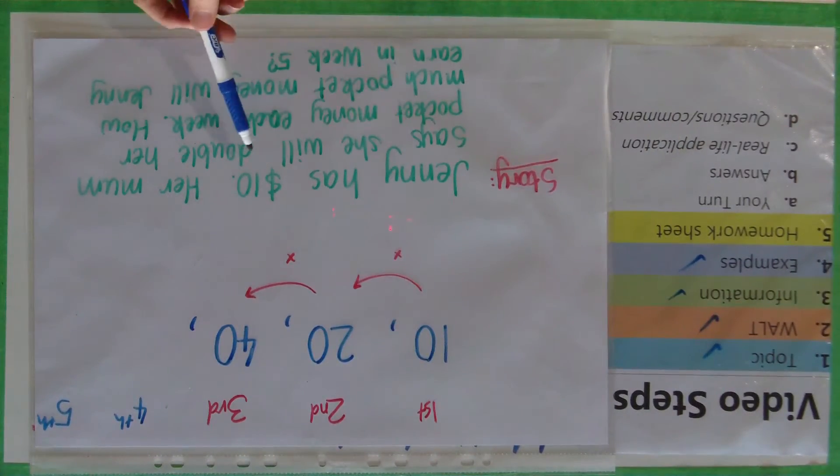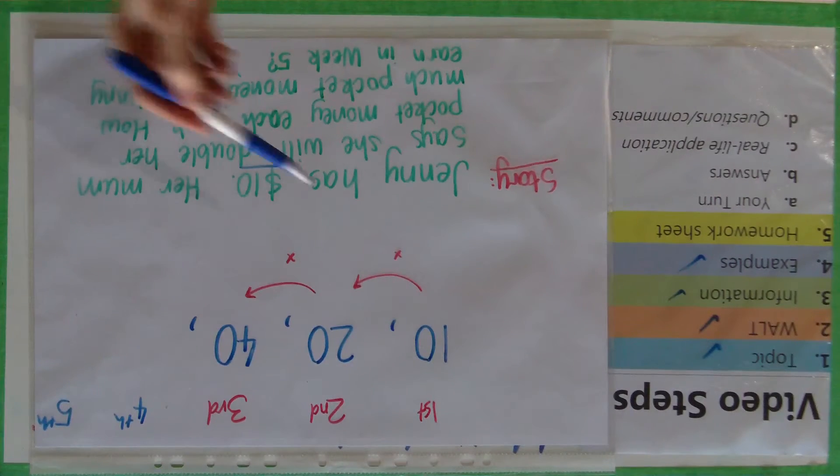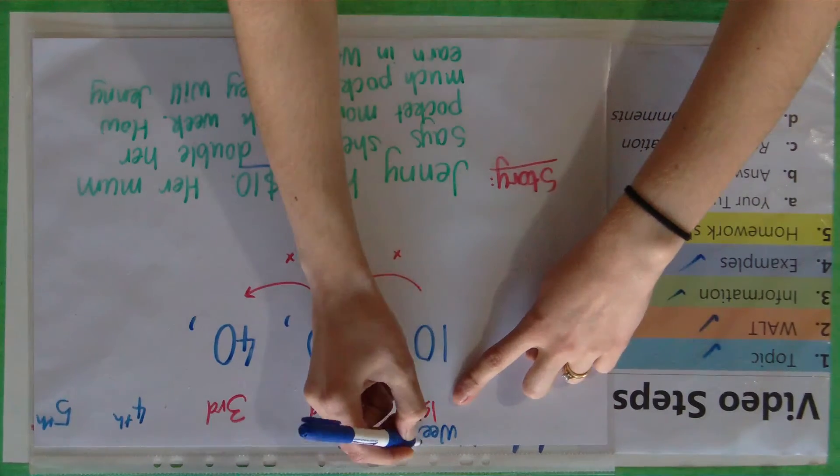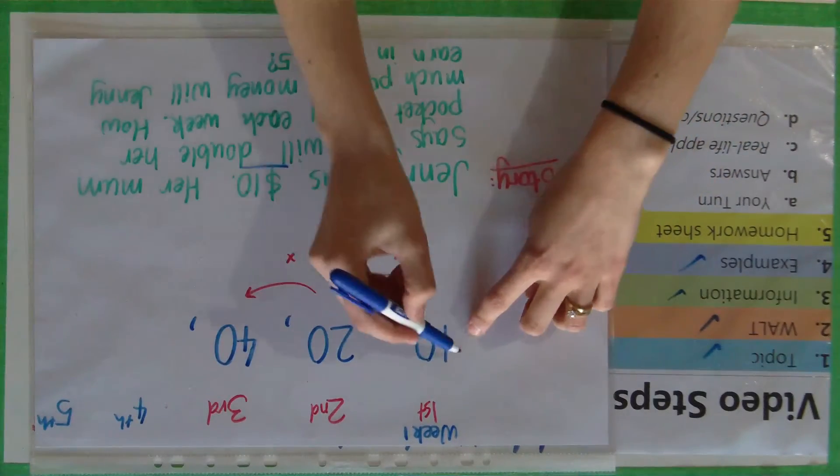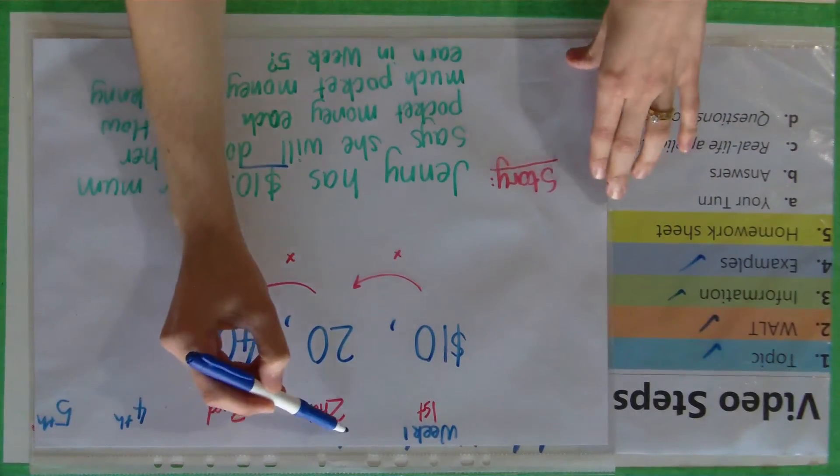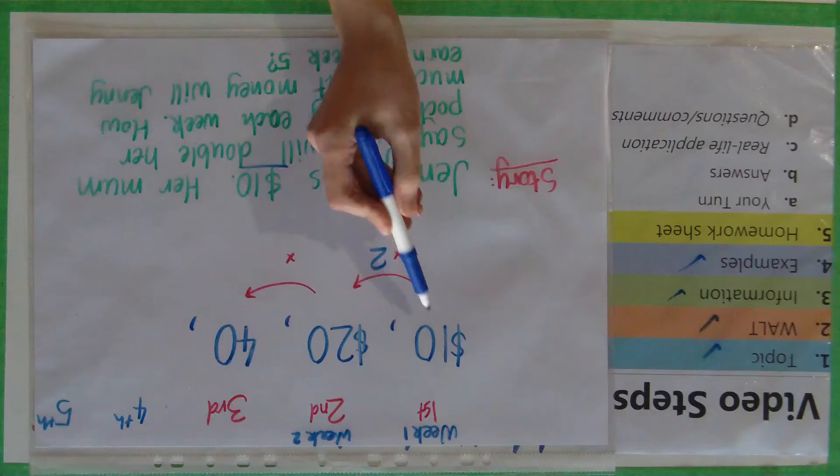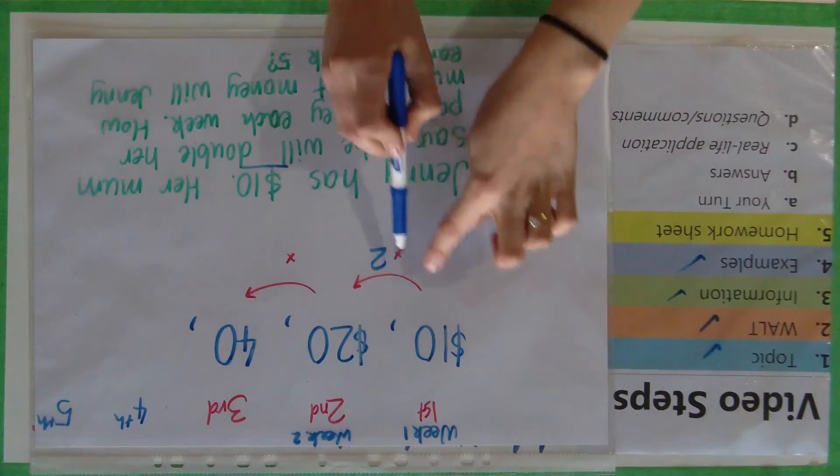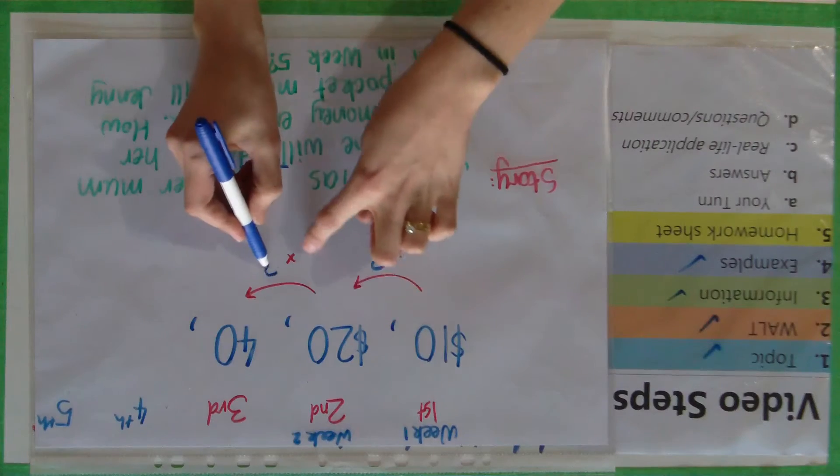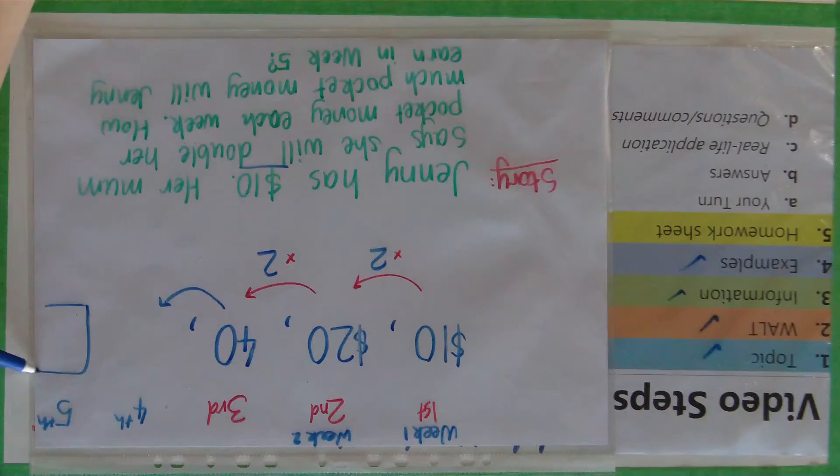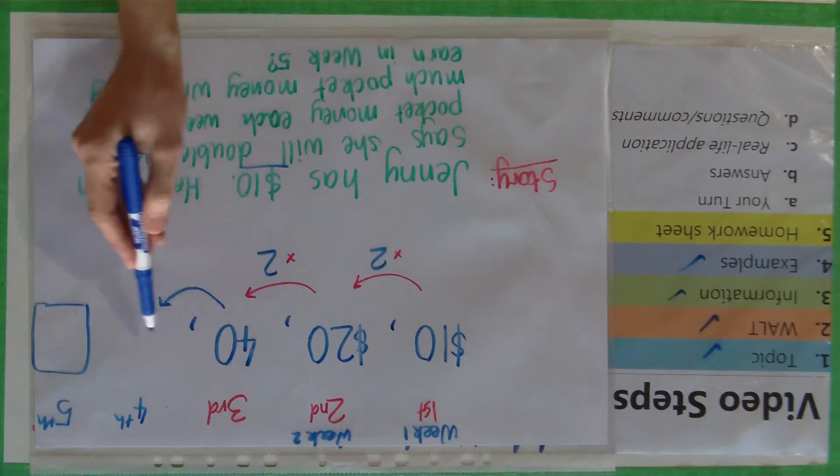So for this one here, Jenny has $10, her mum says that she will double her pocket money each week. How much pocket money will Jenny earn in week 5? So I've already set it up here. Week 1 she would earn $10, then for week 2 she would earn $20 because it is doubling each time based on the previous number. So 10 times 2 is 20, 20 times 2 is 40. And then to figure out week 5 we just need to go on with the pattern and see what it ends up being.